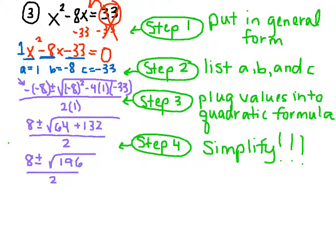And now you want to check and see if this square root is a perfect square. And if you do that in your calculator, it should give you 14. So we're going to rewrite this as 14. So 8 plus or minus 14. Now remember, don't bring the square root with it. We took the square root of 196. So 8 plus or minus 14 divided by 2.